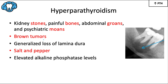Brown tumors are another finding in these patients — giant cell lesions that can appear as solitary or multiple radiolucencies, essentially representing broken-down bone with blood accumulating in the pockets. There is often a generalized loss of lamina dura around the teeth, and a 'salt and pepper' radiographic appearance due to decreased trabecular pattern. Elevated alkaline phosphatase levels in the blood are also commonly seen.